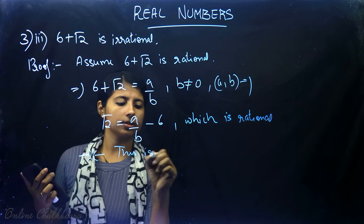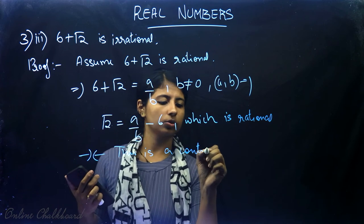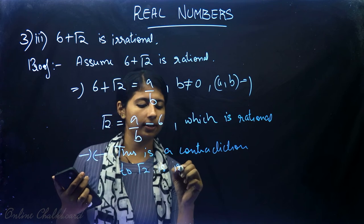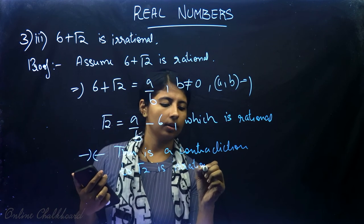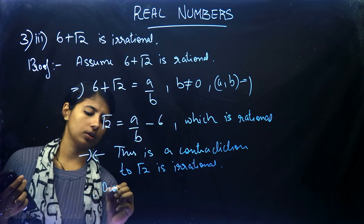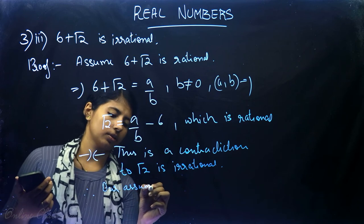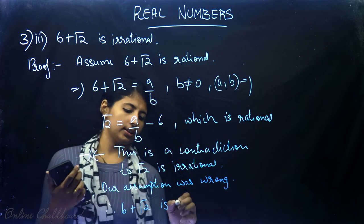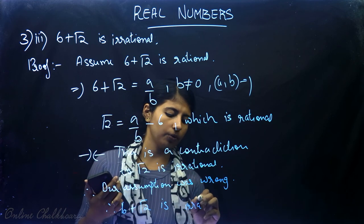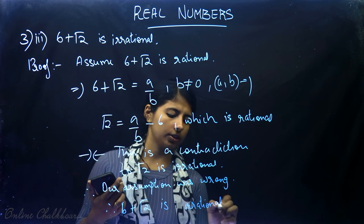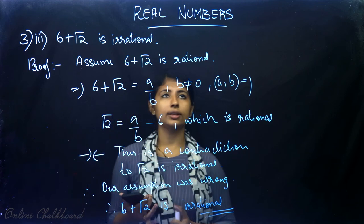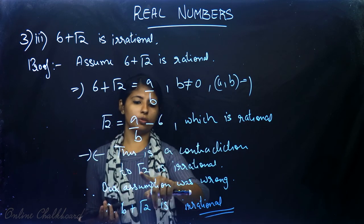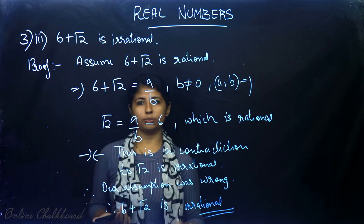This is a contradiction to the fact that √2 is irrational. Therefore our assumption was wrong, and 6 + √2 is not rational — it is irrational. We proved by contradiction that 6 + √2 is irrational. You can also prove √2 is irrational separately to complete this proof.